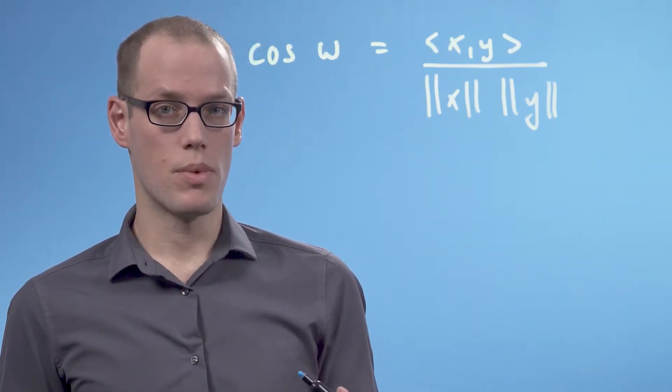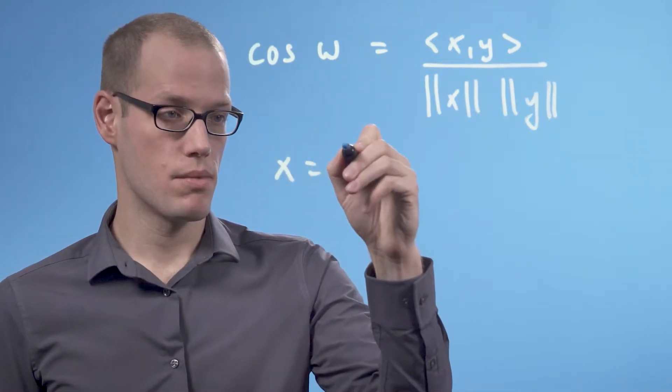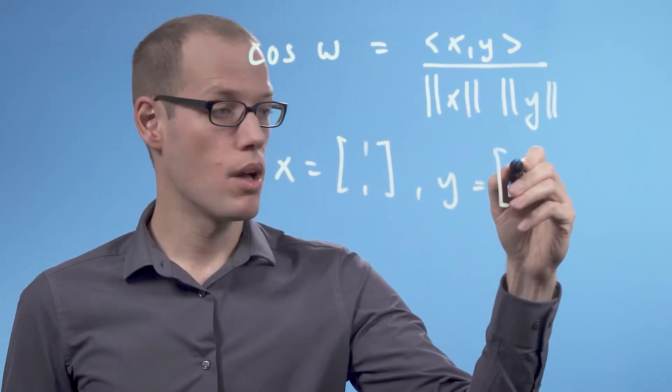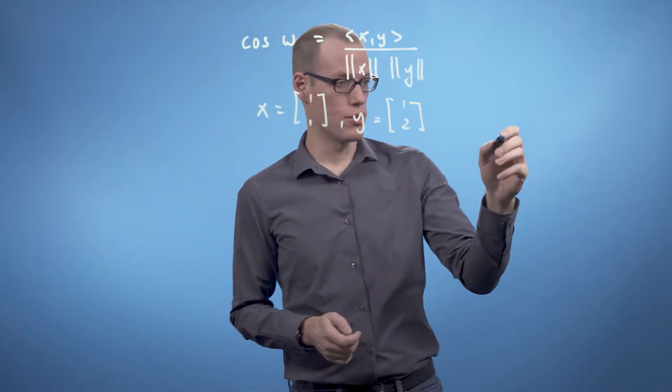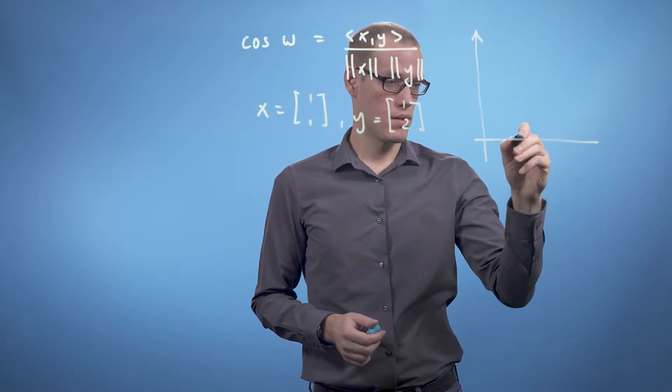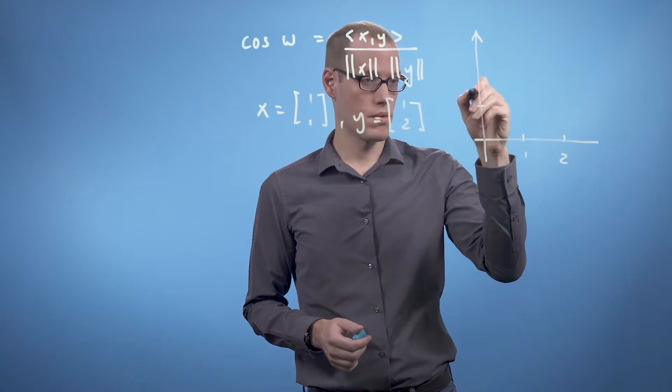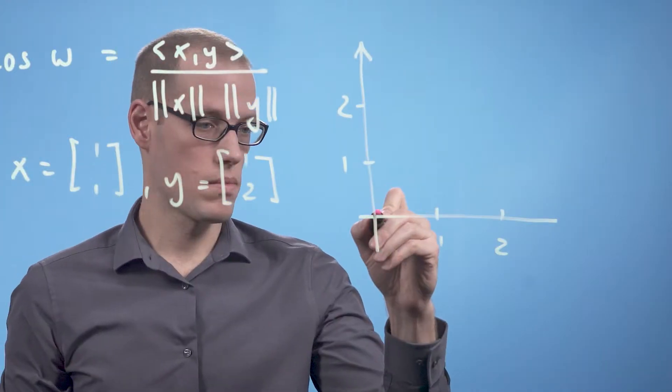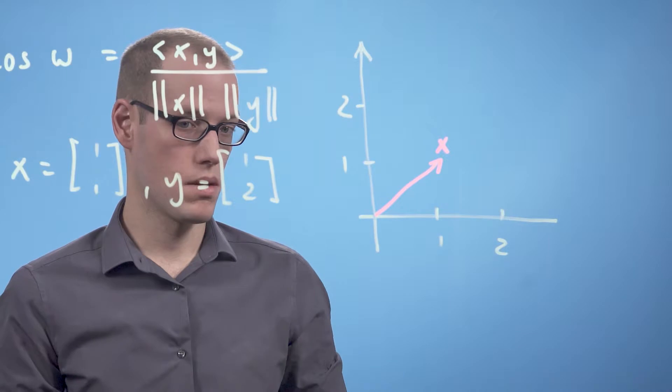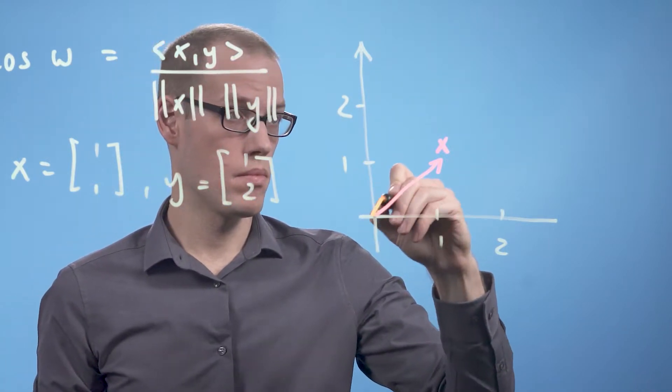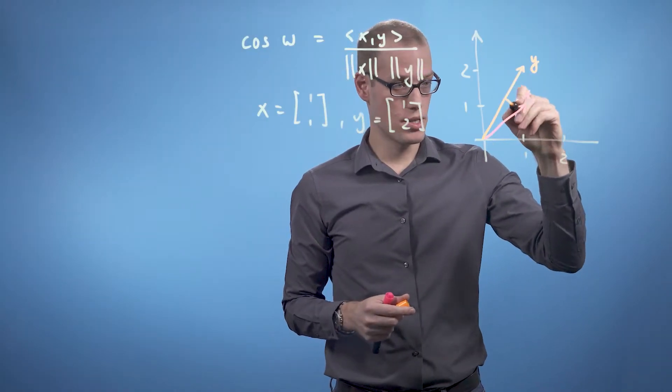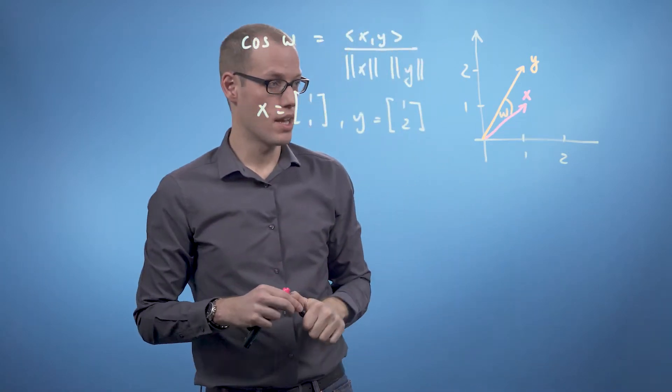And let's compute an angle between two vectors x, which is [1,1], and y, which is [1,1]. Let's quickly draw this. This is x, and this is y.